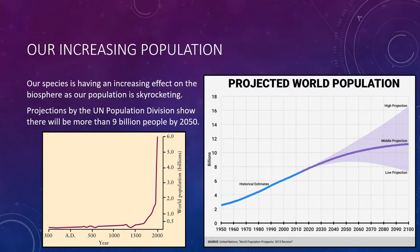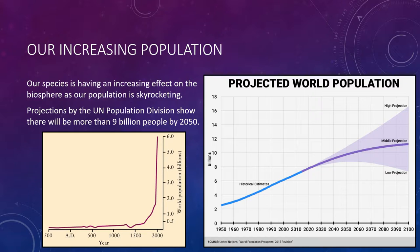Our species is having an increasing effect on the biosphere because our population is skyrocketing. A sharp rise in population began in the late 1700s with the Industrial Revolution and the spread of modern ideas about hygiene, and accelerated in the 20th century thanks to advancements ranging from antibiotics to high-yield grains. In 1960, there were 3 billion people on Earth; in 1975, 4 billion; in 1999, 6 billion. UN projections show more than 8 billion by 2030 and more than 9 billion by 2050. Every human being has basic requirements — food, clothing, and housing — and we all need fuel for cooking and heating. To meet these demands, we burn fossil fuels, cut down forests, and build sprawling cities.